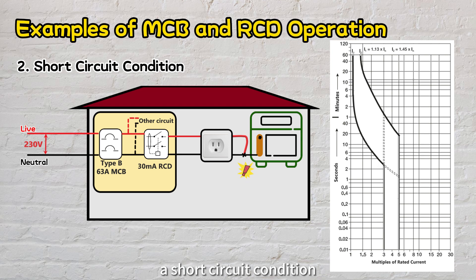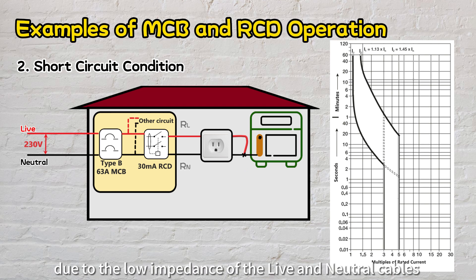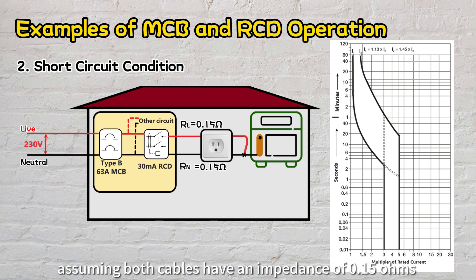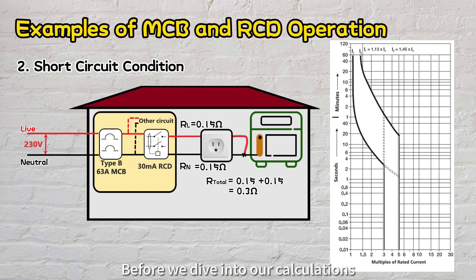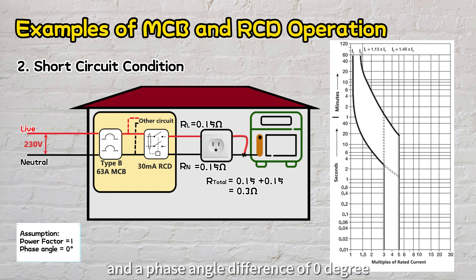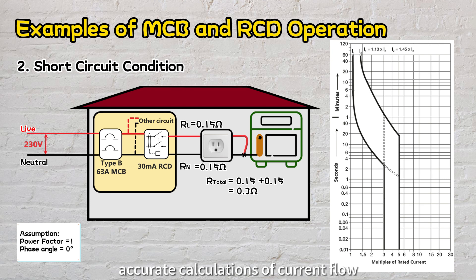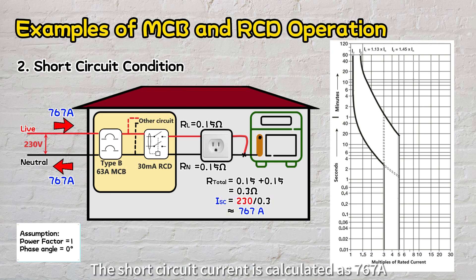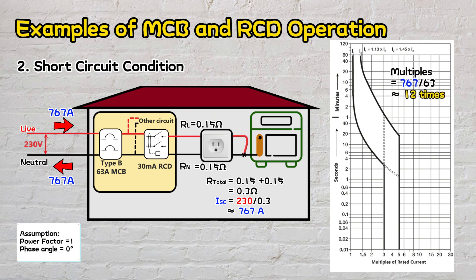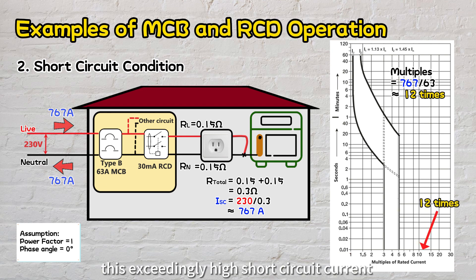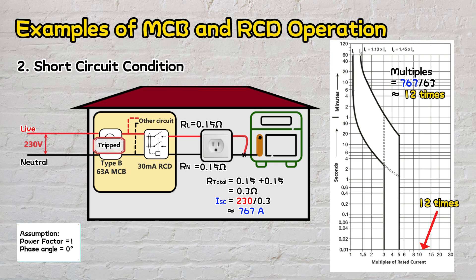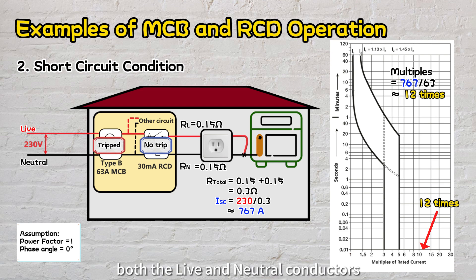Let's proceed to the second scenario: a short-circuit condition where the live cable accidentally makes contact with the neutral cable. The overall impedance is very low due to the low impedance of the cables — assuming both cables have an impedance of 0.15 ohms, totaling 0.3 ohms. Assuming a power factor of 1, the short-circuit current is calculated as 767 amps, approximately 12 times the 63 amps rated current. Referring to the tripping curve, this exceedingly high current will trigger the magnetic tripping mechanism and cut off the fault in less than 10 milliseconds, preventing a fire. Similar to the first scenario, the RCD will not trip because an equal current is flowing in both the live and neutral conductors.